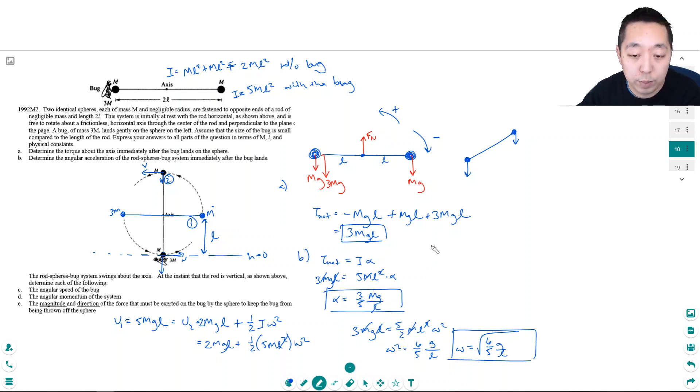Angular momentum is just I times omega. The I was 5ml squared times omega, which is the square root of six-fifths g over l.